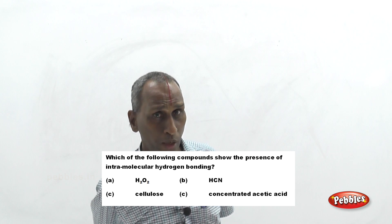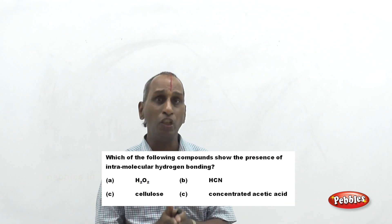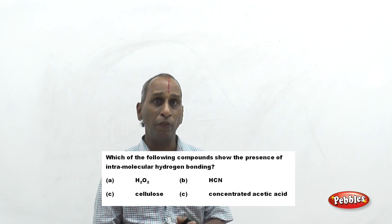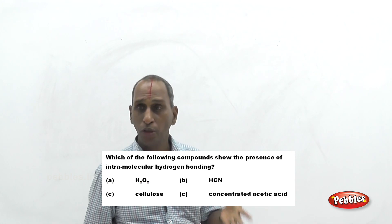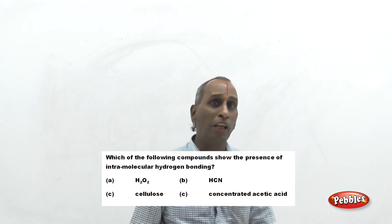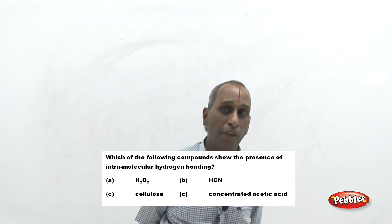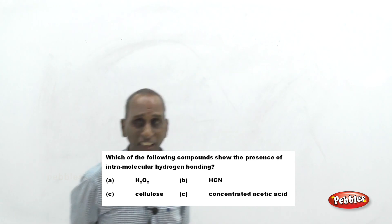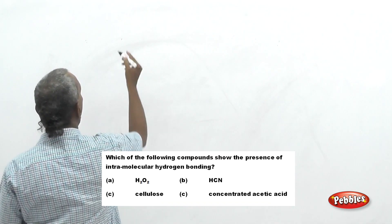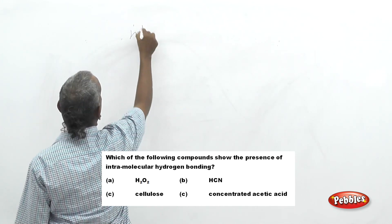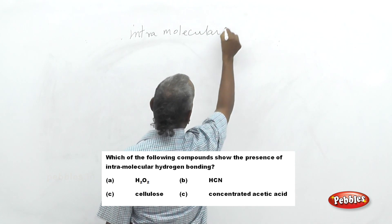Hydrogen bonding is the phenomenon of interaction between hydrogen and a more electronegative atom. If this bonding exists within the molecule, it is called intramolecular hydrogen bonding. If it exists between the molecules, it is called intermolecular hydrogen bonding. The question asks which of the following species contains intramolecular hydrogen bonding.